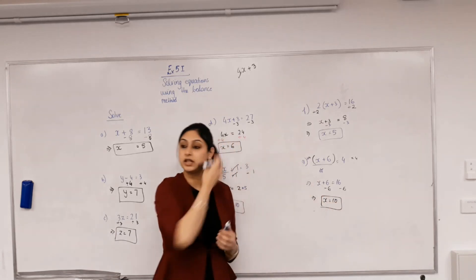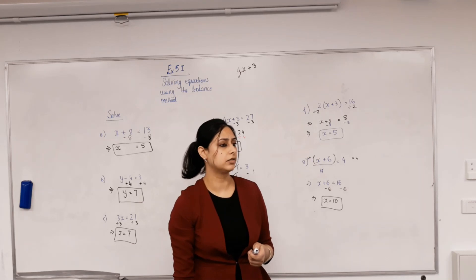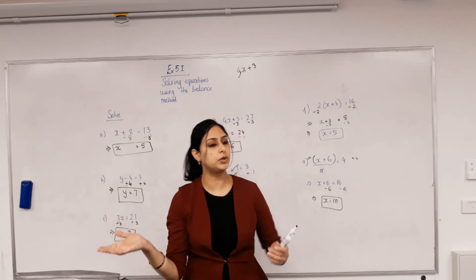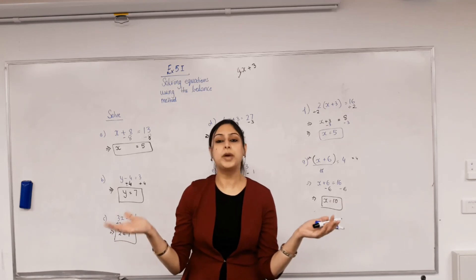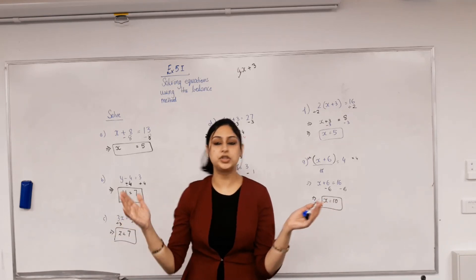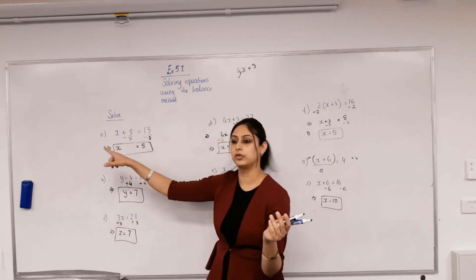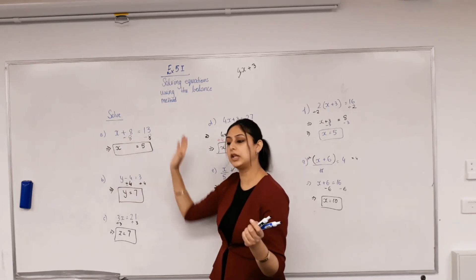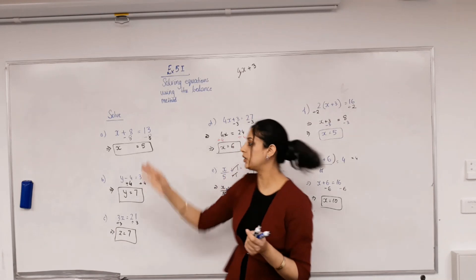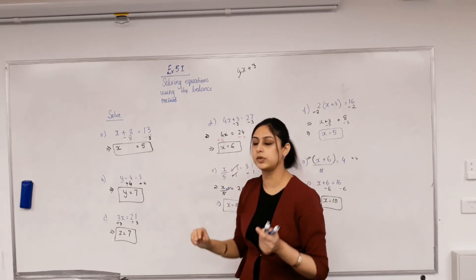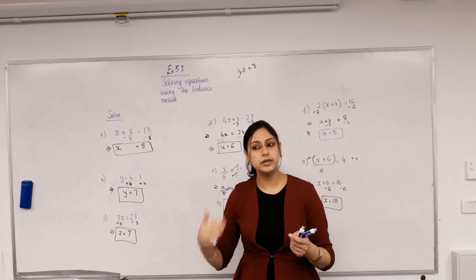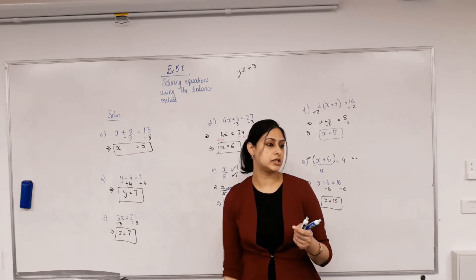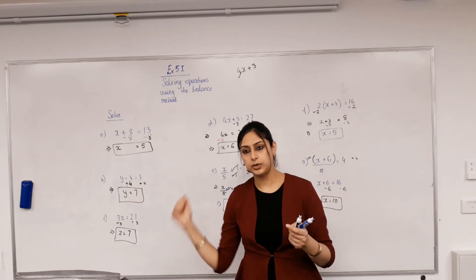That's solving equations - there's nothing difficult about it. How do we solve an equation? Whatever we do to one side we do to the other. We undo all operations done to our unknown. The point is to get the unknown by itself and everything else on the other side - x equals, y equals, z equals - by doing inverse operations in reverse order.